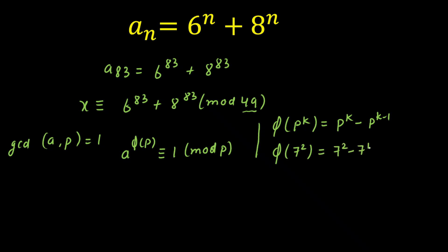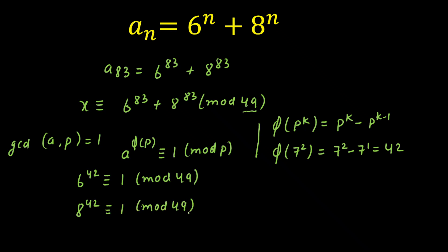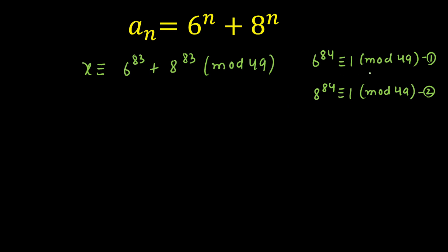Using this, I can write two statements. First: 6^42 ≡ 1 (mod 49). Similarly: 8^42 ≡ 1 (mod 49). But right now the power we need is 83, and the nearest convenient power is not 42. So I can double these to get: 6^84 ≡ 1 (mod 49) and 8^84 ≡ 1 (mod 49). I will use these two results in the next step to calculate the remainder quickly.